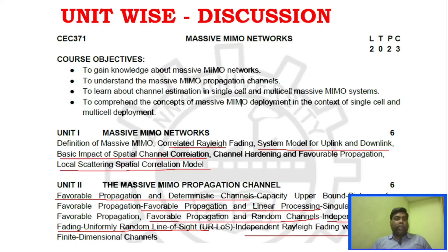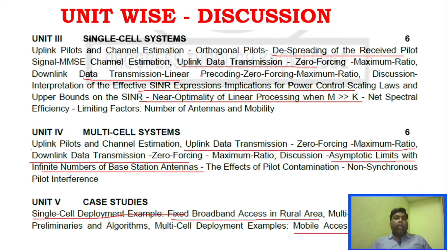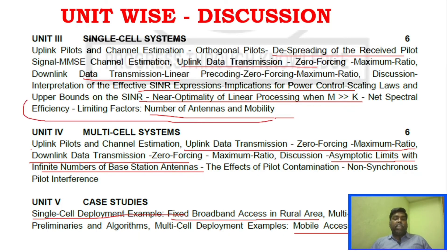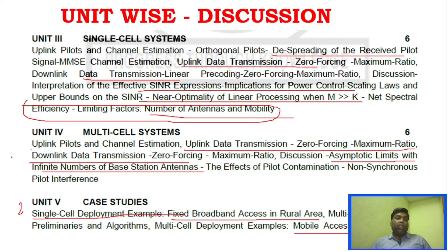For Unit 3, focus on maximum ratio processing. Key topics include the number of antennas and limiting factors, net spectral efficiency, number of antennas and mobility — just go through these. For Unit 4, prepare around two sure-shot questions. For Unit 5 as well, prepare two questions covering the deployment scenarios.